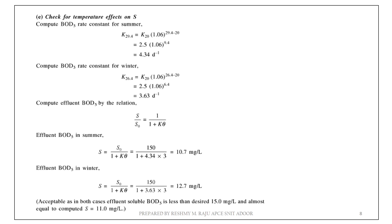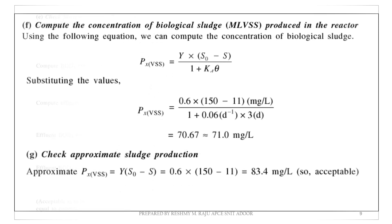The effluent BOD relation is: S/S₀ = 1 / (1 + K·θ). The desired effluent BOD is 15 mg/L. The computed result is 71.0 mg/L. Then, Px_vs = Y × (S₀ − S), which gives 83.4 mg/L. This is acceptable.